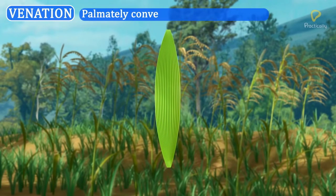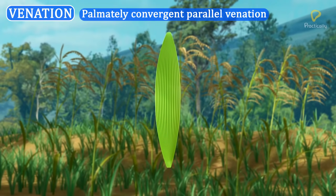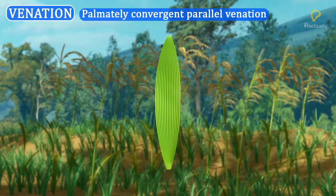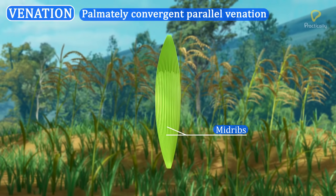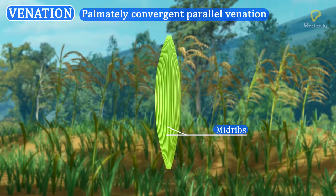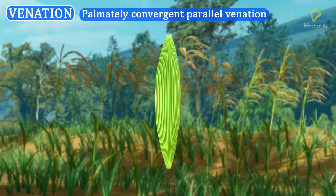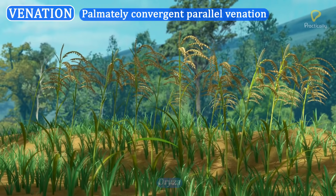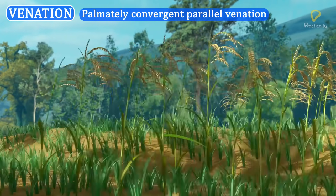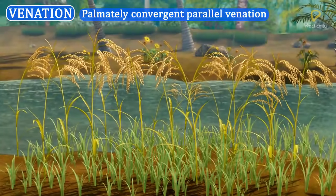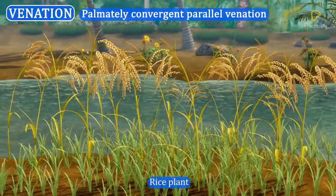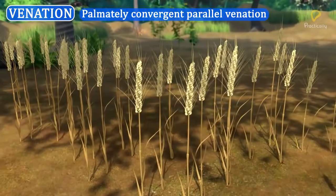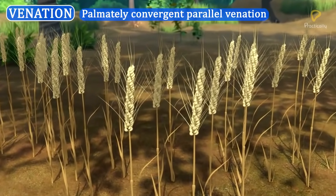Palmately convergent parallel venation: In this venation, many mid-ribs arise from the base of the lamina, run parallel, and meet towards its apex. This venation is seen in the leaves of Oryza and Triticum. Oryza is the generic name of the rice plant, and Triticum is the generic name of the wheat plant.